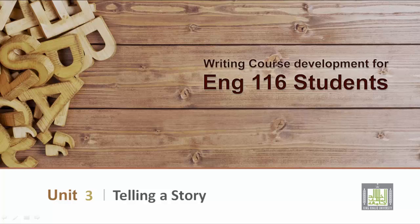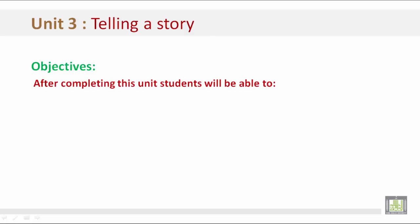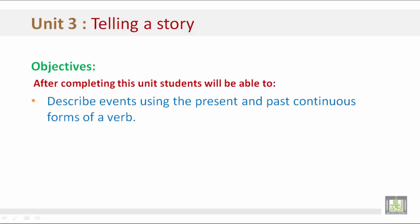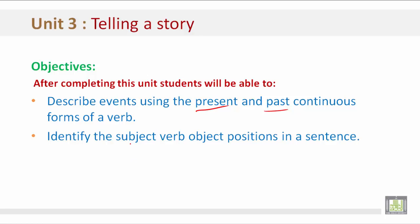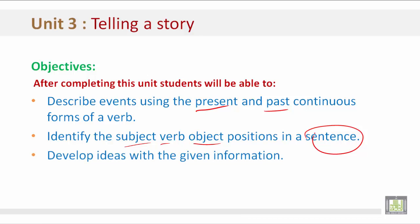Writing Course Development for English 116 Students, Unit 3: Telling a Story. Objectives: After completing this unit, students will be able to describe events using the present and past continuous forms of a verb, identify the subject, verb, and object positions in a sentence, and develop ideas with the given information.